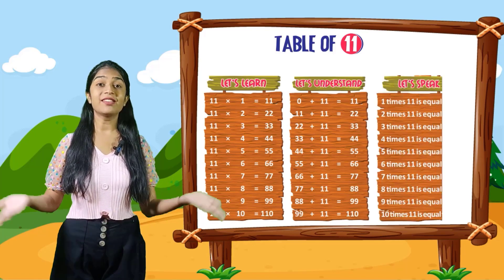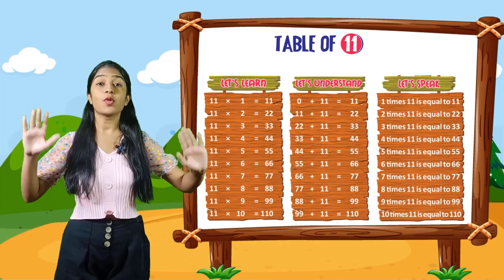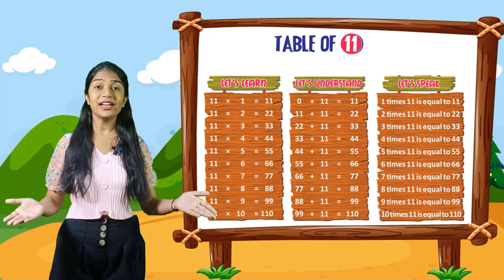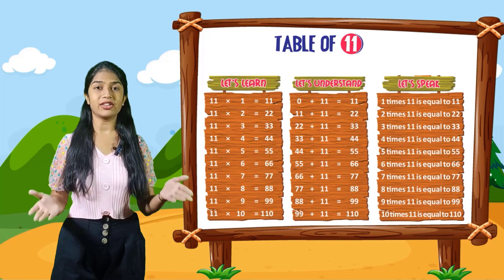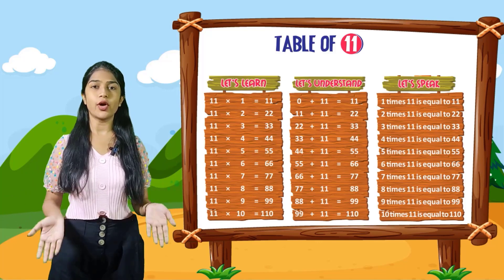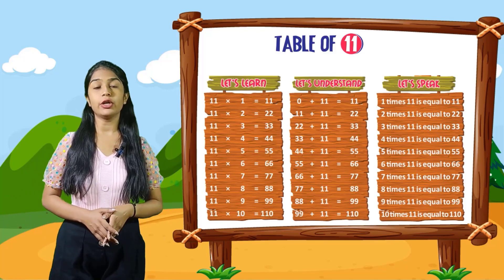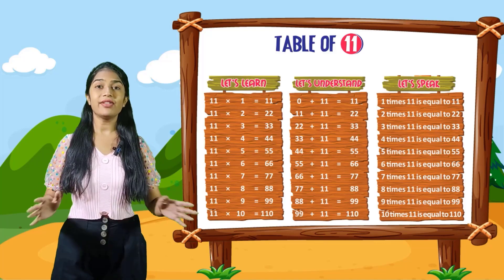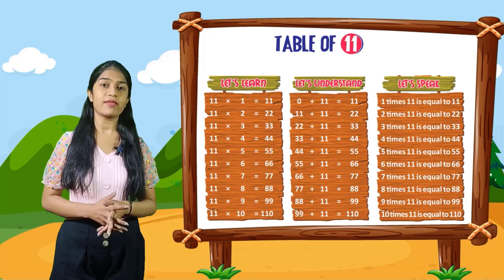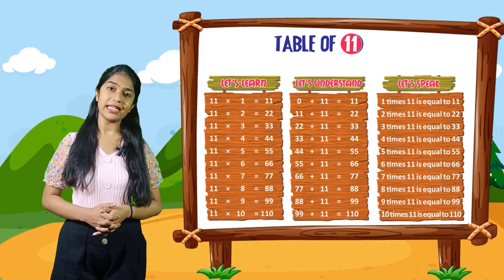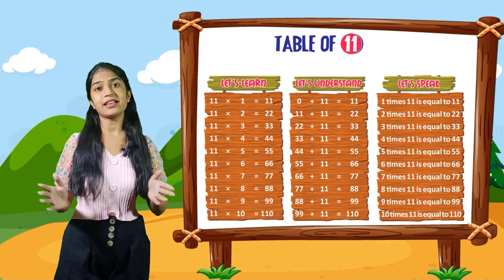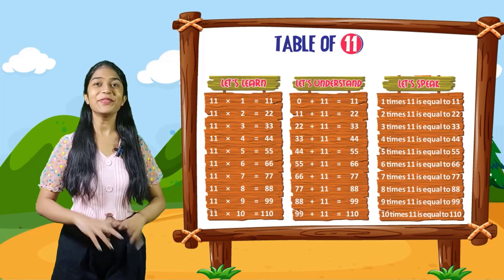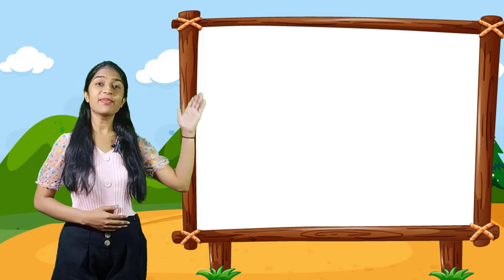So now let's speak. You have to speak out with me. 1 times 11 is equal to 11. 2 times 11 is equal to 22. 3 times 11 is equal to 33. 4 times 11 is equal to 44. 5 times 11 is equal to 55. 6 times 11 is equal to 66. 7 times 11 is equal to 77. 8 times 11 is equal to 88. 9 times 11 is equal to 99. 10 times 11 is equal to 110.